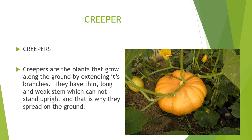Creepers. Creepers are plants that grow along the ground by extending their branches. They have thin, long, and weak stem, which cannot stand upright. That is why they spread on the ground. Examples of creepers are pumpkin, watermelon, etc.